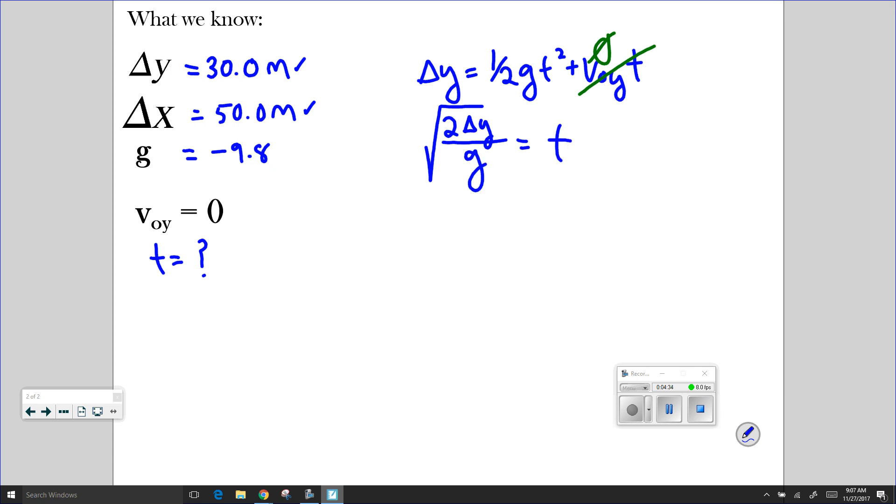And now I can rearrange that equation to solve for time. And this will turn into another equation that looks somewhat familiar. Where t, or the time it takes for that projectile to fall, is equal to the square root of 2 times the y displacement divided by gravity.